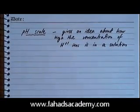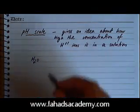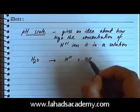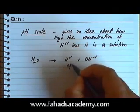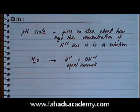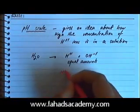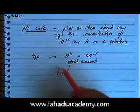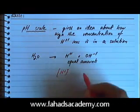Let's look at water first. If you have a water molecule, or lots of water molecules, a very tiny amount actually breaks down to produce H⁺ and OH⁻ ions. Whenever water breaks down, it produces equal amounts of H⁺ and OH⁻ ions. The concentration of H⁺ can be written using square brackets — this represents the concentration of the H⁺ ion.